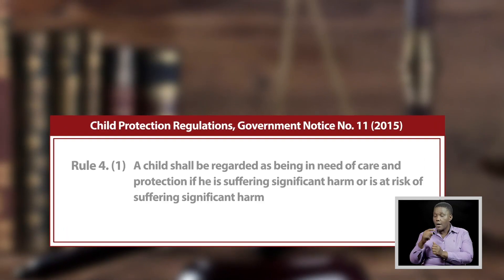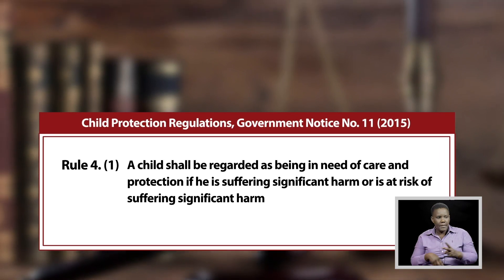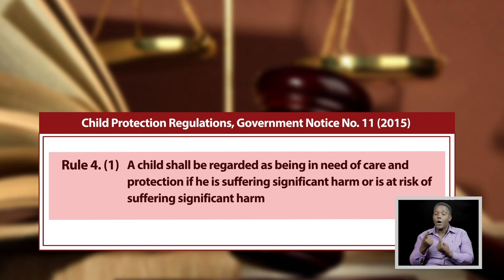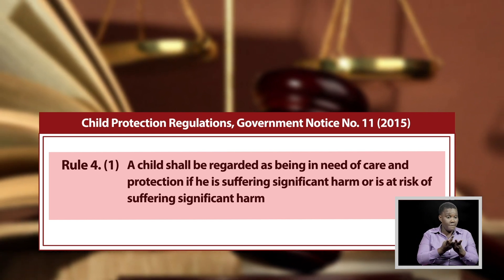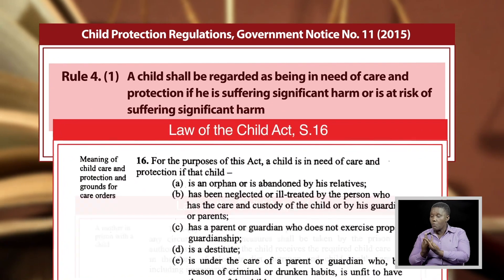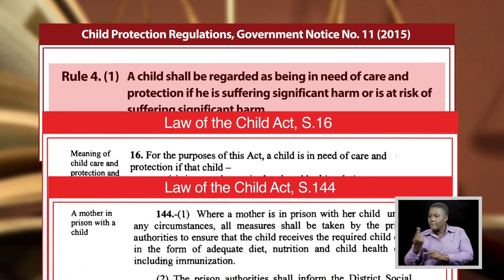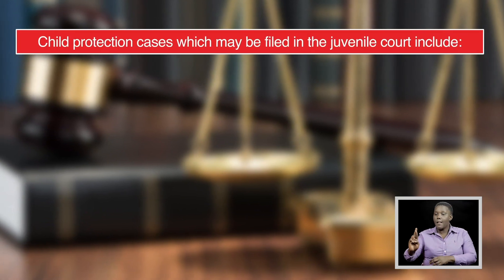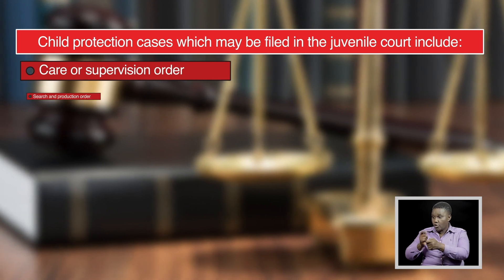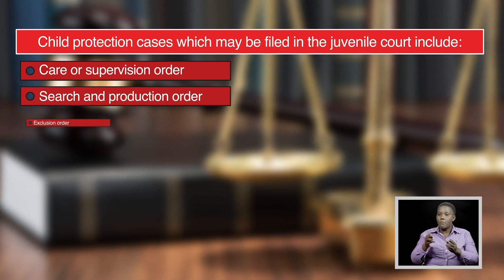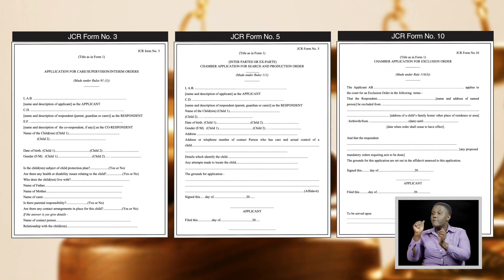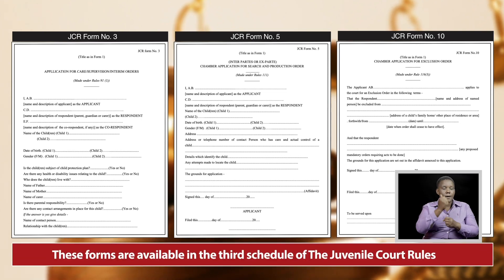Child Protection Applications. The Child Protection Regulations, Government Notice No. 11 of 2015, define a child in need of protection. Under Rule 4, Sub-Rule 1, a child shall be regarded as being in need of care and protection if they are suffering significant harm or are at risk of suffering significant harm, and one or more circumstances under Section 16 or Section 144 of the Law of the Child Act, Cap 13, Revised Edition 2019, apply. Child protection cases that may be filed in the juvenile court include: care or supervision order, search and production order, and exclusion order, lodged by filling Forms No. 3, 5, and 10 respectively, available in the third schedule of the Juvenile Court Rules.